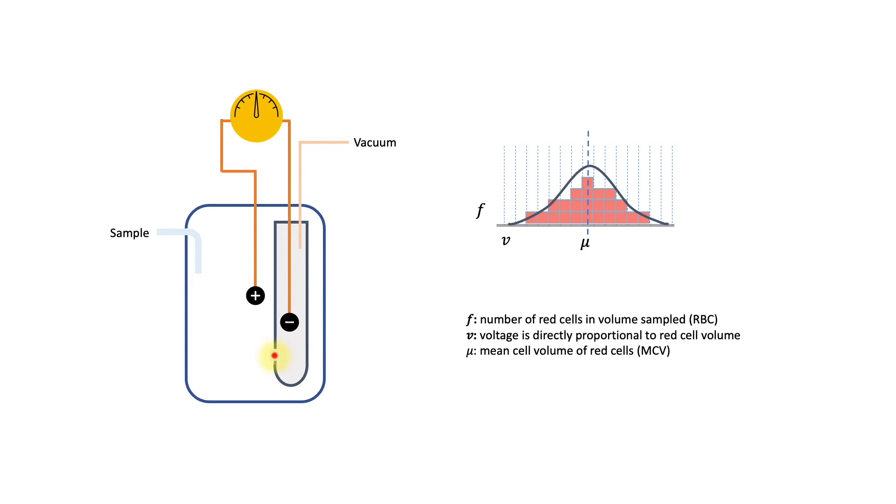From this histogram, one can count the number of events which is the red cell count for a given volume. The mean value of the histogram provides an estimate of the mean size of the red cells.